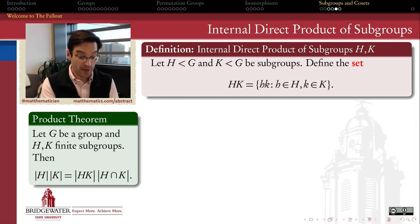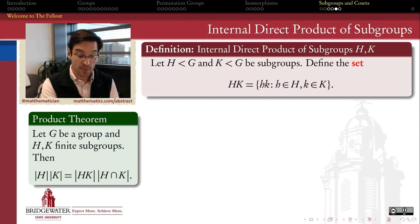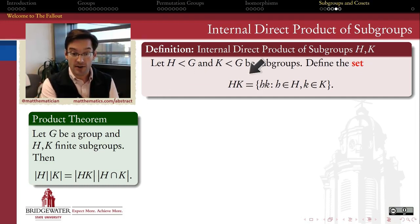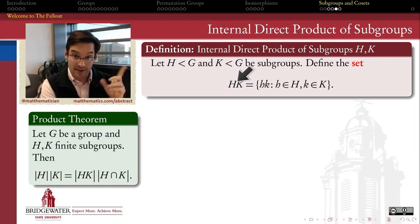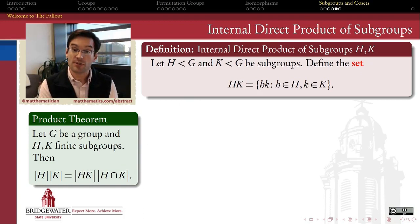Another way to think about this: if I multiply the order of H by the order of K, I'm going to get some possibly large product. But that product equals the cardinality of the set HK — I'm using cardinality because I don't know if it's a subgroup — times the order of the intersection subgroup of H and K.